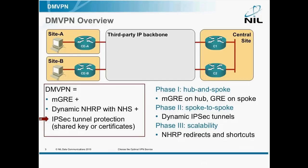The only thing that's new is that Cisco has integrated all three technologies in a solution that they call DMVPN. And they made sure that the solution actually works — they built it, tested it, fixed all the bugs, and now it works.